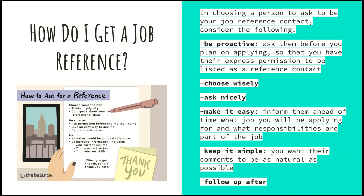In choosing a person to be your job reference contact, you need to consider the following. Be proactive — don't wait until the last minute to ask someone. Ask them before you plan on applying. The moment you decide you want a job, ask and compile a list of job references so that you have their express — meaning their explicit — permission to be listed as a reference contact. You don't want to list people you haven't asked, because when a potential employer calls them, they might be surprised and it gets very uncomfortable.